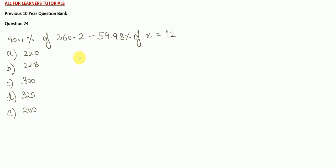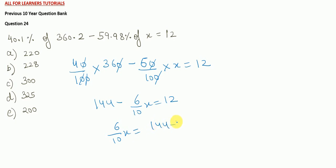Let's see one more example of percentage question. 40.1, you can directly write it as 40 percentage, that is divided by 100. Of is into 360.2, you can write it as 360 minus 9.98, you can write it as 60%, so divide by 100 into X is equal to 12. This cancels out, so 36 into 4 is 144. 6 by 10 X is equal to 12. Now, you can easily calculate it. 6 by 10 X equals 144 minus 12, that is 132. So, X will become 1320 upon 6. This comes out to be 220, that is option number B.